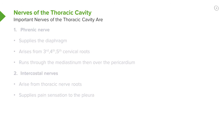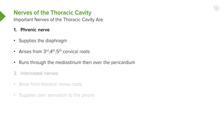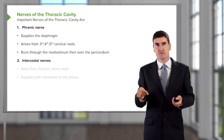The nerves of the thoracic cavity: the most important nerve is the phrenic nerve, which supplies the diaphragm. We've discussed already that it arises from the third, fourth, and fifth cervical roots. It runs through the mediastinum and over the pericardium to reach and innervate the diaphragm.